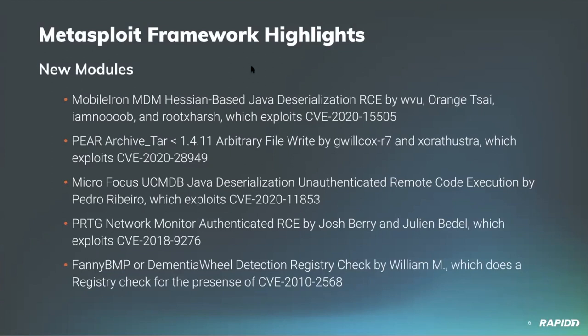One of the first modules was written by our own William Vu, exploiting a vulnerability researched and developed by Orange Tsai, I Am Noob, and WoodX Harsh, in the MobileIron MDM — targeting CVE-2020-15505. That was a relatively high-profile vulnerability using an interesting Hessian-based Java deserialization technique.